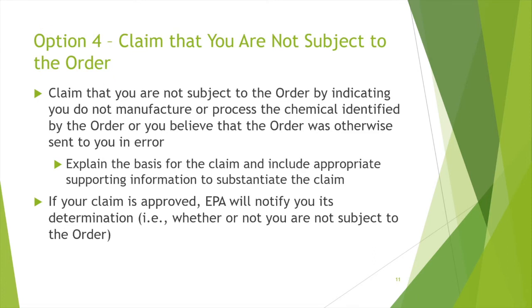Option 4 — claim that you are not subject to the order. Claim that you are not subject to the order by indicating that you do not manufacture or process the chemical identified by the order, or you believe that the order was otherwise sent to you in error. Explain the basis for the claim and include appropriate supporting information to substantiate the claim. If your claim is approved, EPA will notify you of its determination — i.e., whether or not you are not subject to the order.